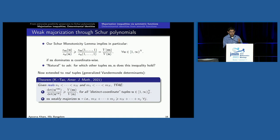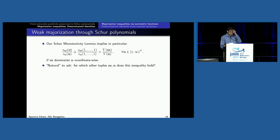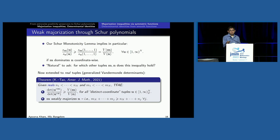When does this inequality hold over the entire log-positive orthant? You can ask the same question not just for integer tuples of exponents but for real tuples — then Schur polynomials are not defined, so you take the generalized Vandermonde determinant det(U_i^{M_j}) divided by det(U_i^{N_j}). As long as the U_i's are distinct, both matrices are non-singular, and you can divide and ask for the same condition. This inequality holds for all distinct-coordinate tuples u_i in the log-positive orthant if and only if M weakly majorizes N. So Schur polynomials — or more generally Vandermonde determinants — connect to inequalities via weak majorization.